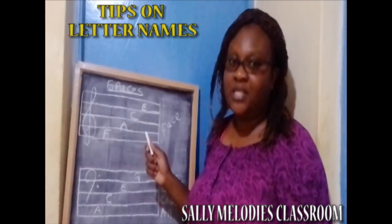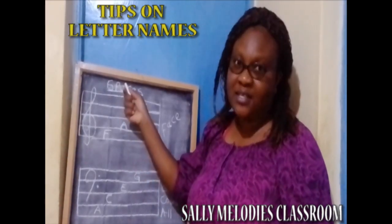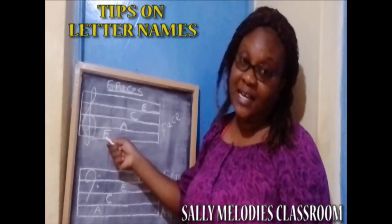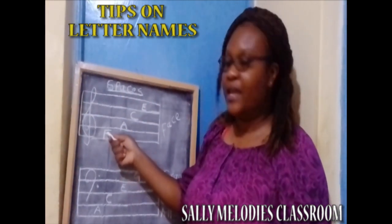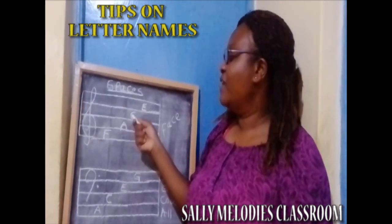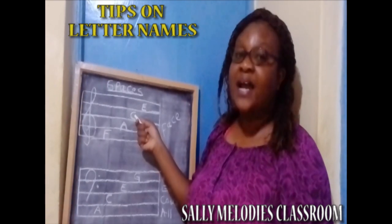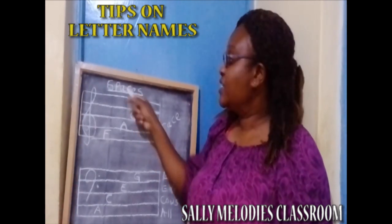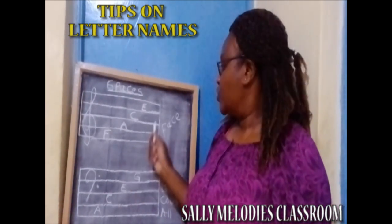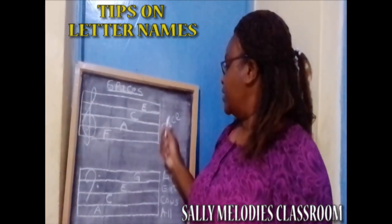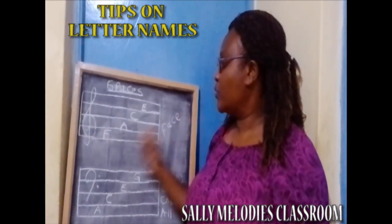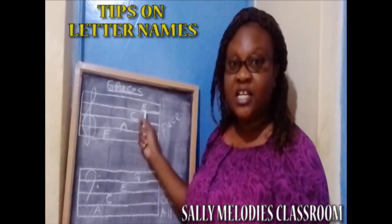Here are some simple tips for the spaces — how do we name the spaces? Our first space is an F, then we have an A, then a C, then an E. These are just spaces; we did the lines in the previous lesson. So this is very simple: you just write the word FACE so that you can remember the letter names on the staff for the treble clef.